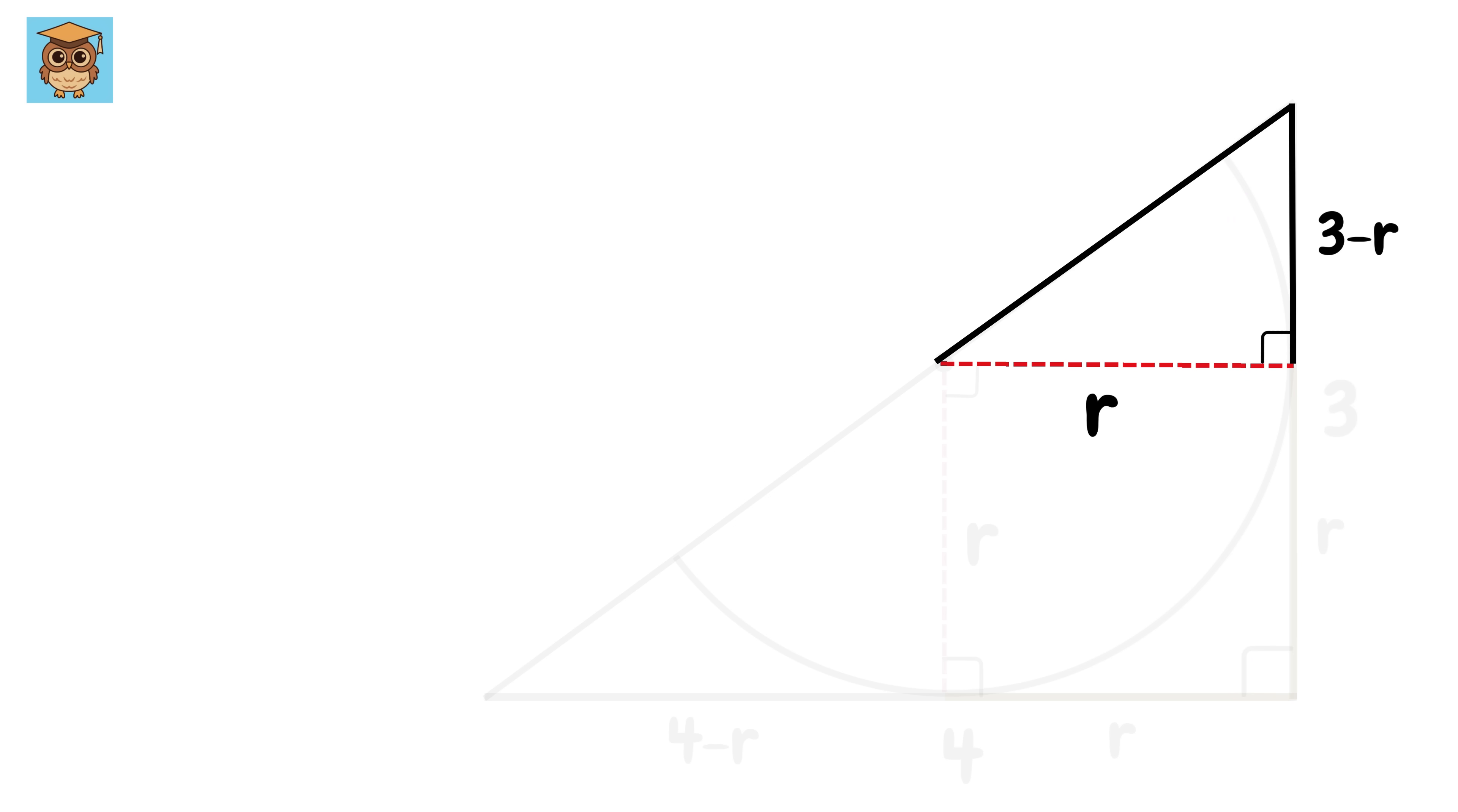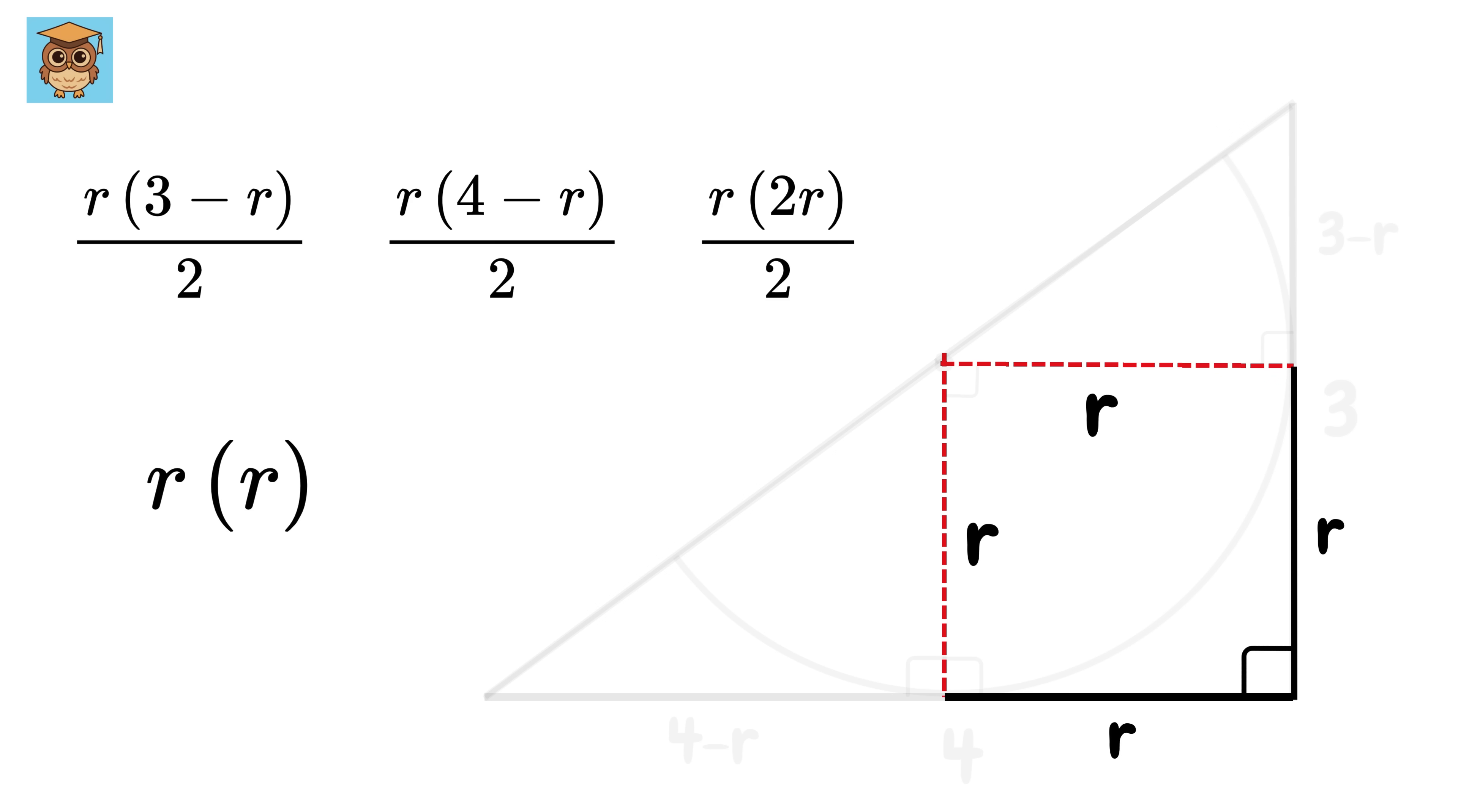Now consider this right triangle. What will be its area? It will be base times height divided by 2, isn't it? So it will be r times (3 minus r) over 2. Now consider this triangle. What will be its area? It will be r times (4 minus r) over 2. And now consider this square. Its area will simply be r times r, right? Multiply and divide by 2 to get this as r times 2r over 2.